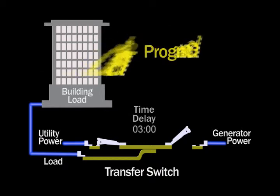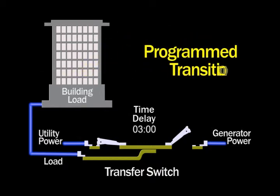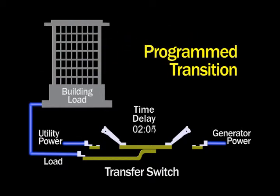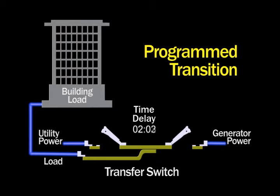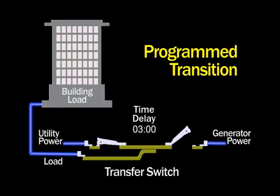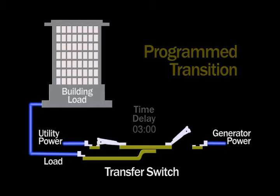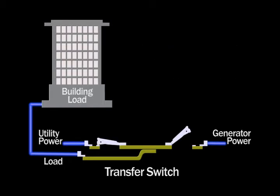Program transition mode adds a time delay to pause the transfer switch in the center off position. This allows time for motor voltages to decay before connecting to an out-of-phase power source, which could potentially damage the motors.